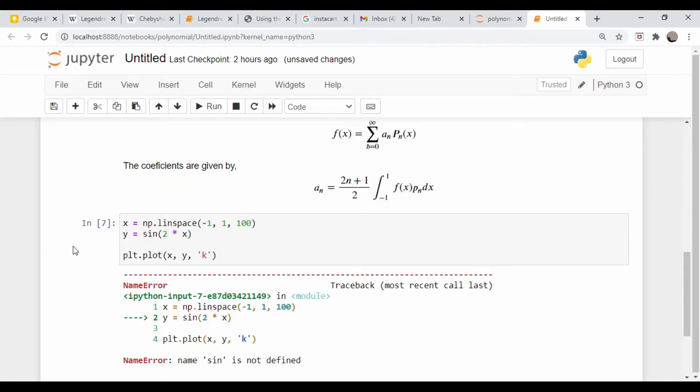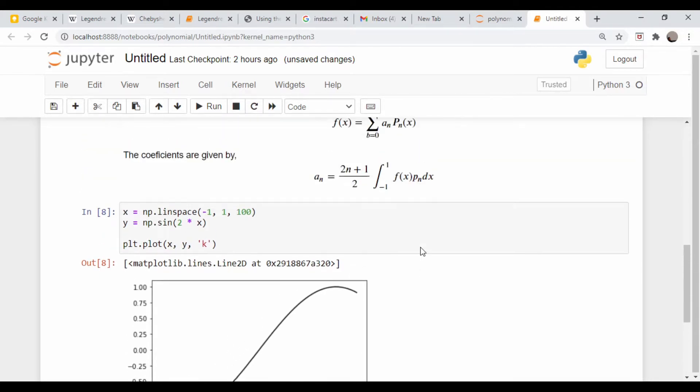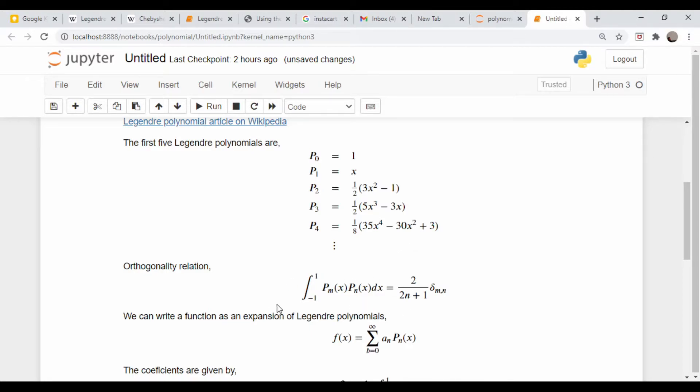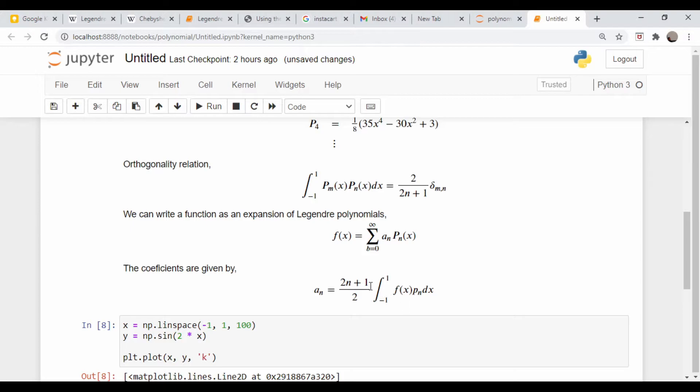And plt.plot x comma y, black line. That's what we're trying to approximate right there. Now we're going to take advantage of this orthogonality relationship to get these coefficients, these a sub n's here. This is the formula down here; it's pretty straightforward how to derive it. Basically you're just taking the inner product with some arbitrary polynomial, and because of the orthogonality, if m is not equal to n, all the other terms in the summation go to zero except for when m equals n.